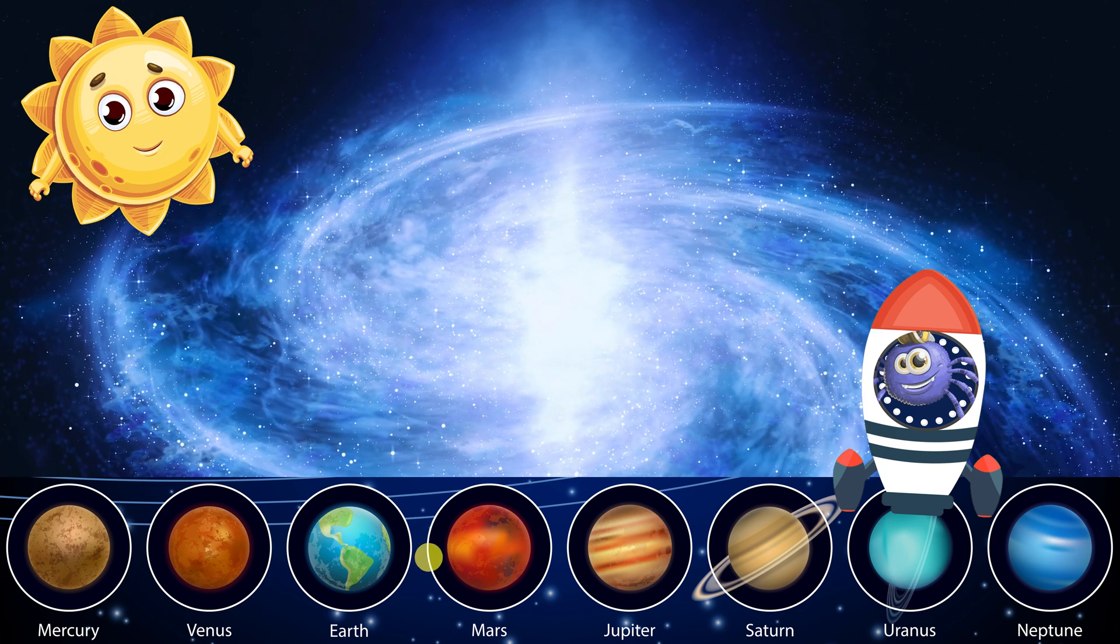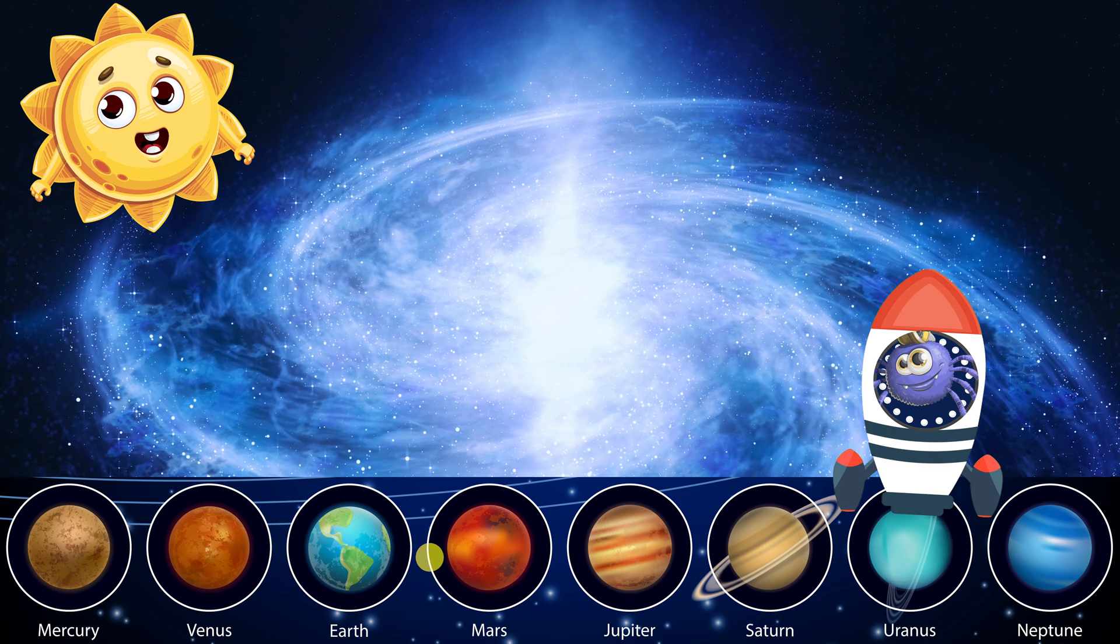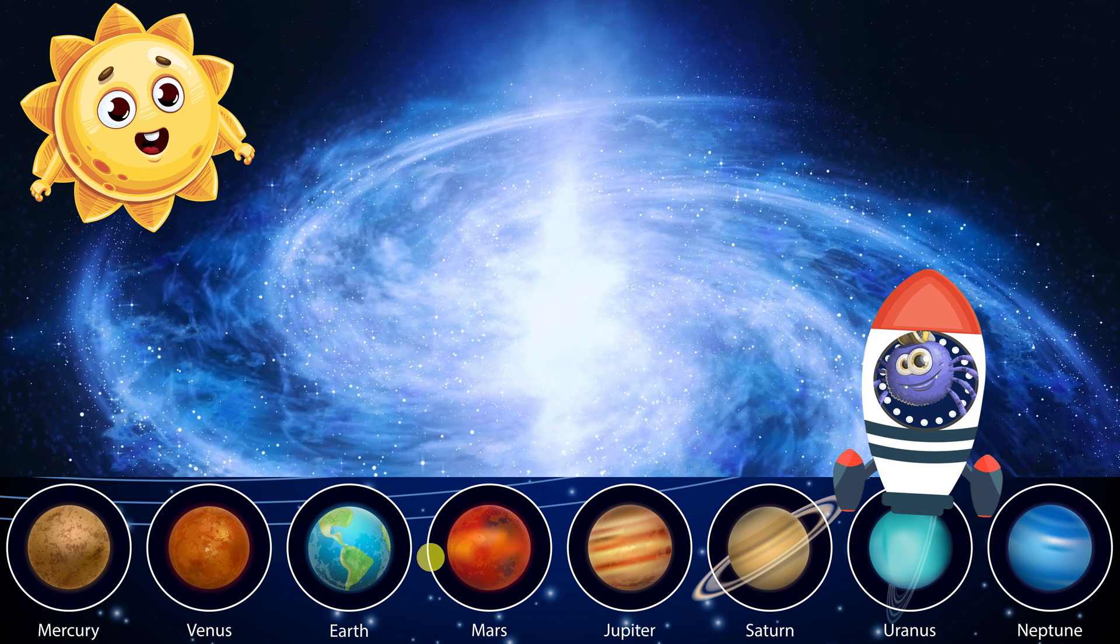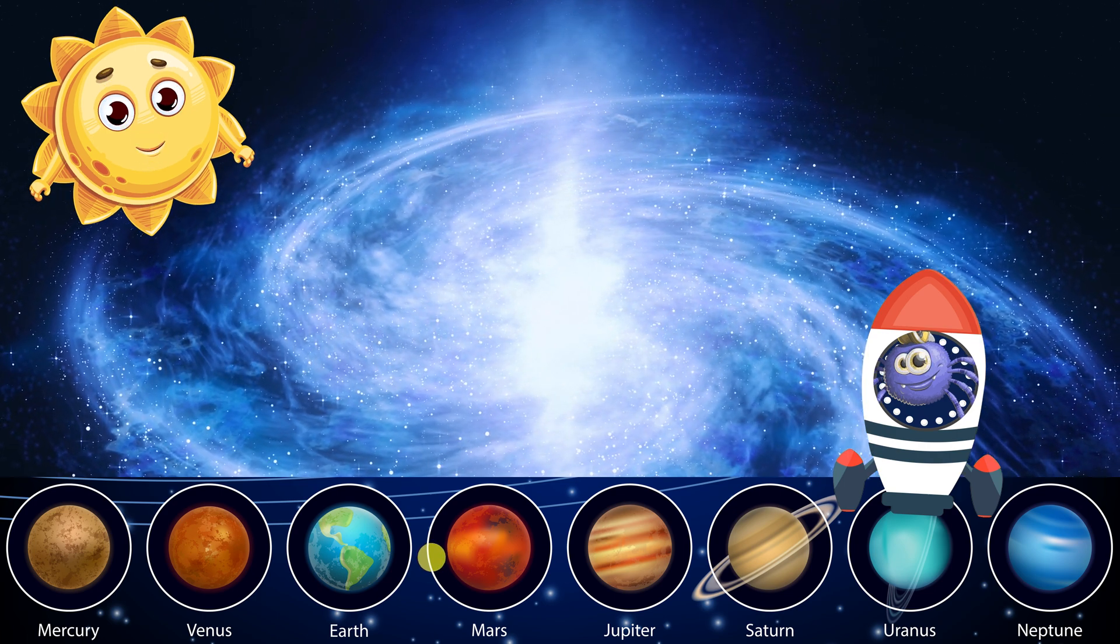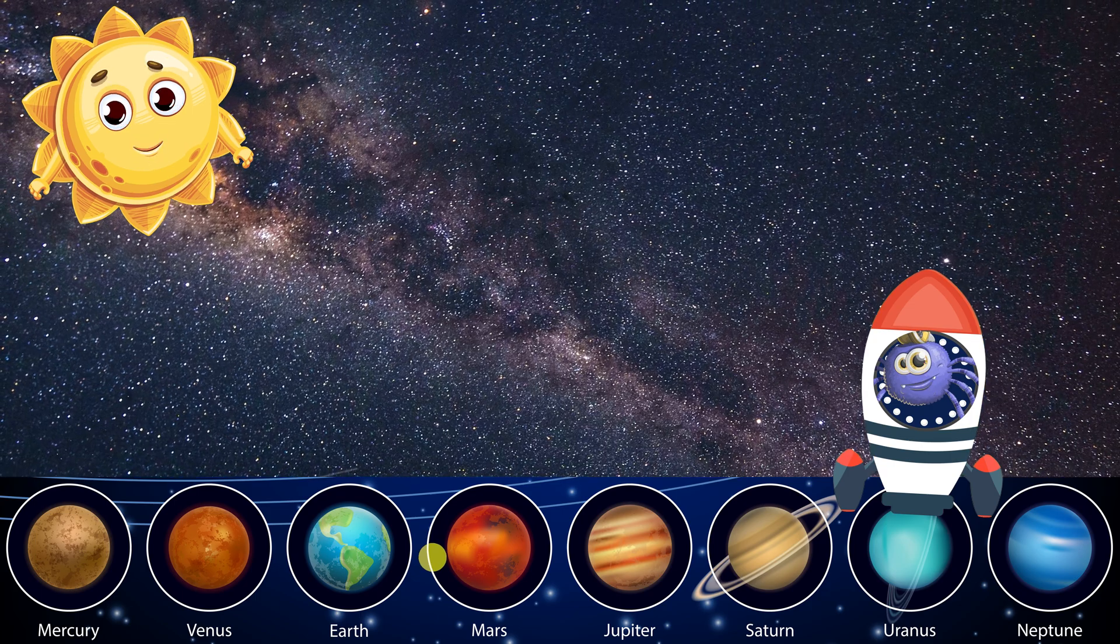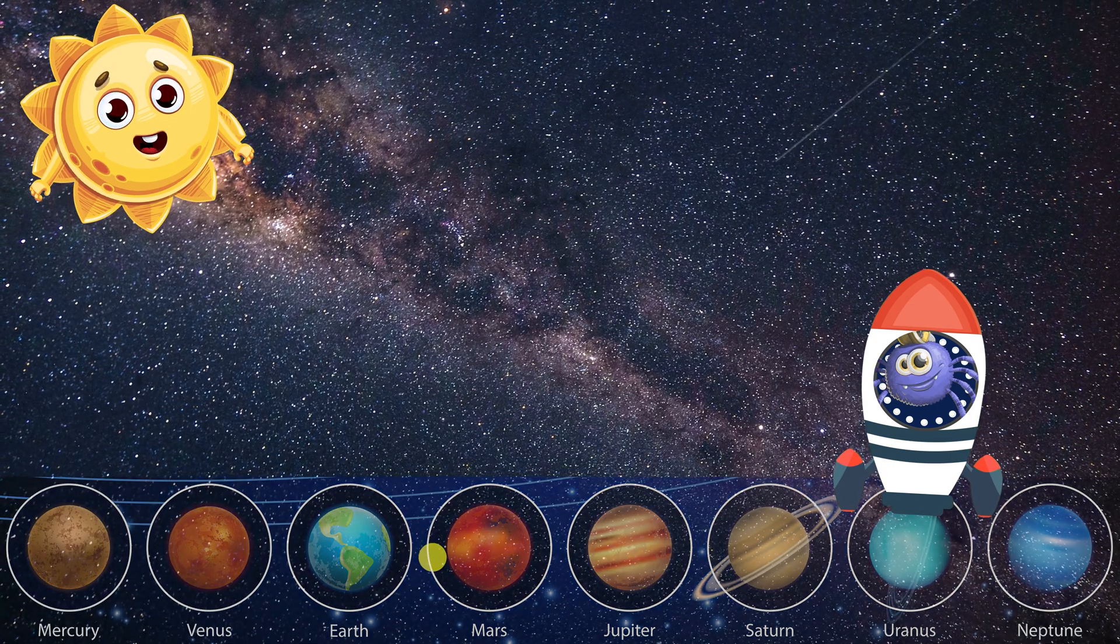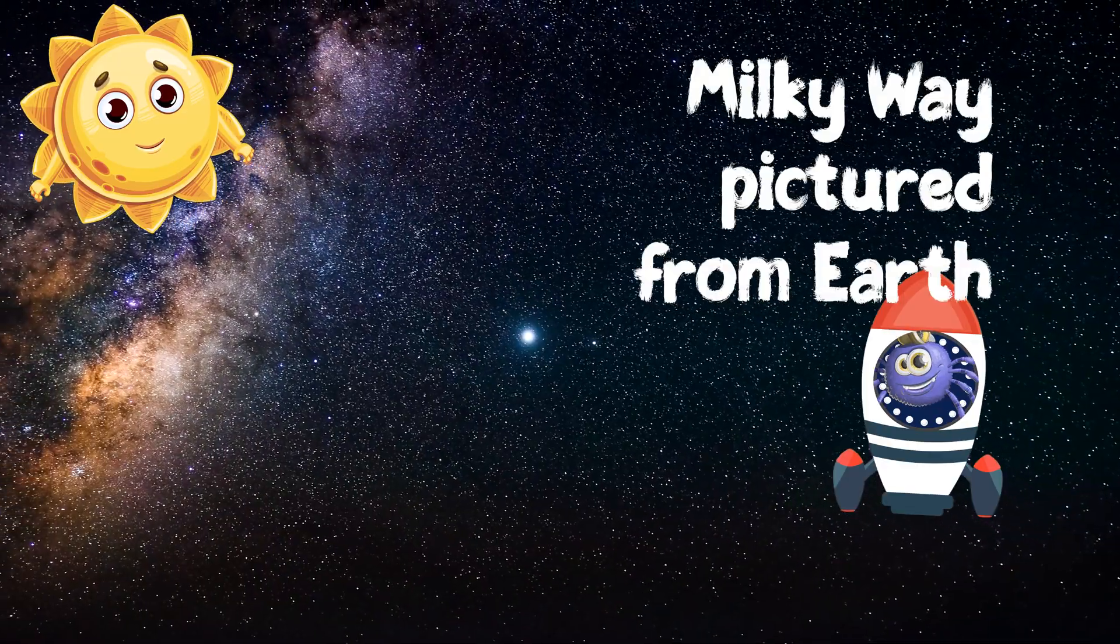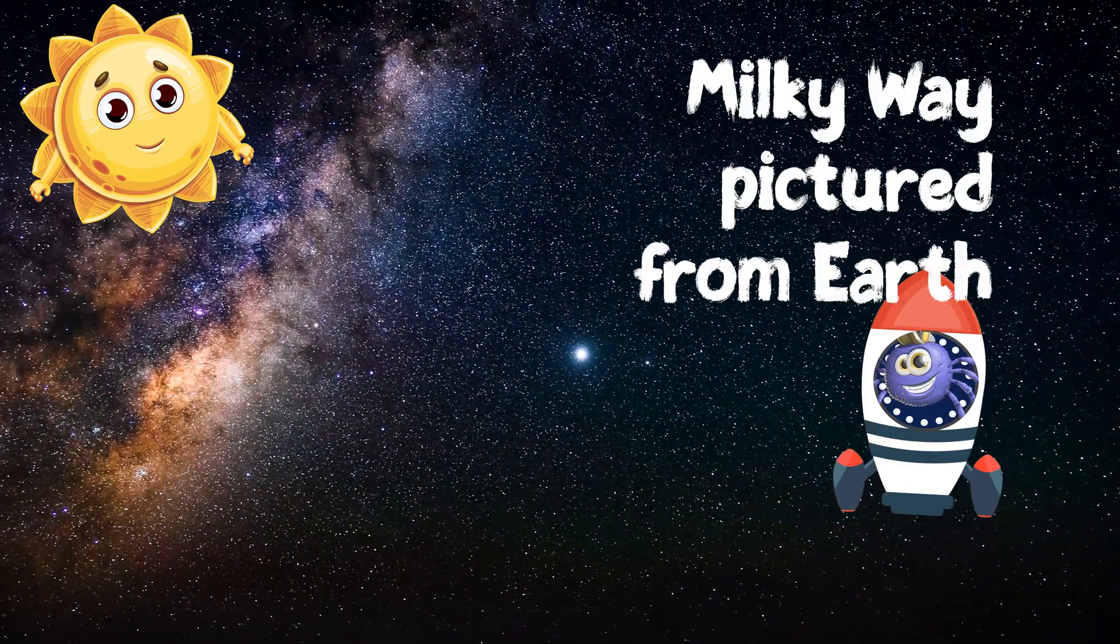Only four arms? I have eight. The spiderweb galaxy may have you beat. The Milky Way contains about 200 billion stars, including me, the sun. Wow! You have billions of brothers and sisters? You could say that. Well, you're the most special star to me and every other living thing on Earth.